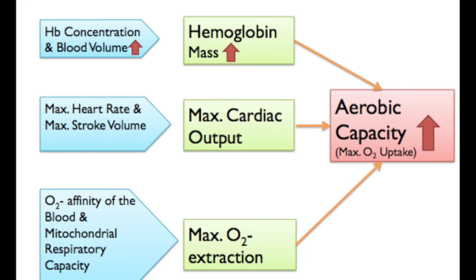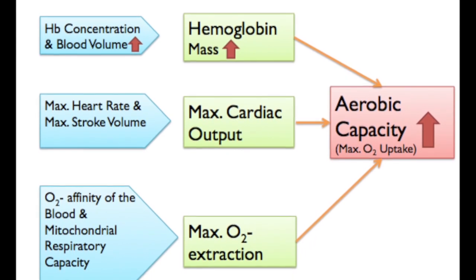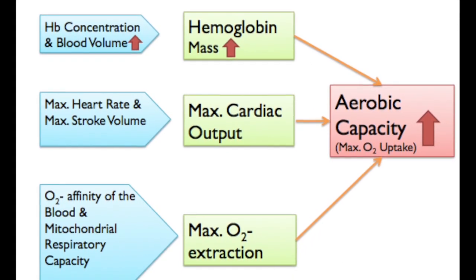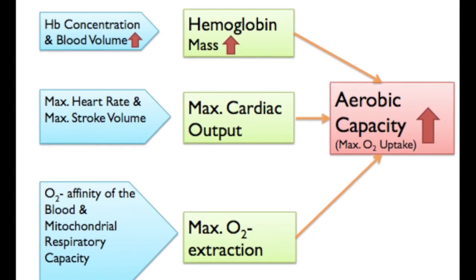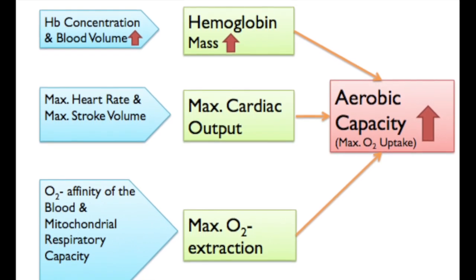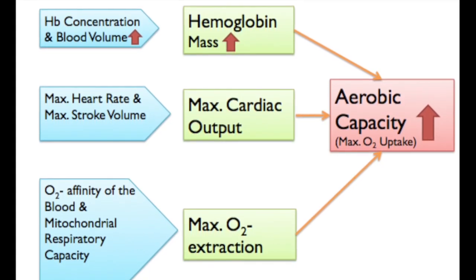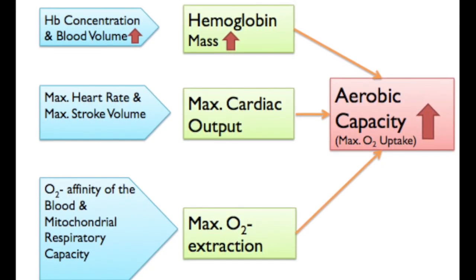Therefore, the only method to enhance physical performance left is to increase the oxygen content in the artery by enhancing the hemoglobin mass. In other words, hemoglobin concentration and blood volume contribute to hemoglobin mass.